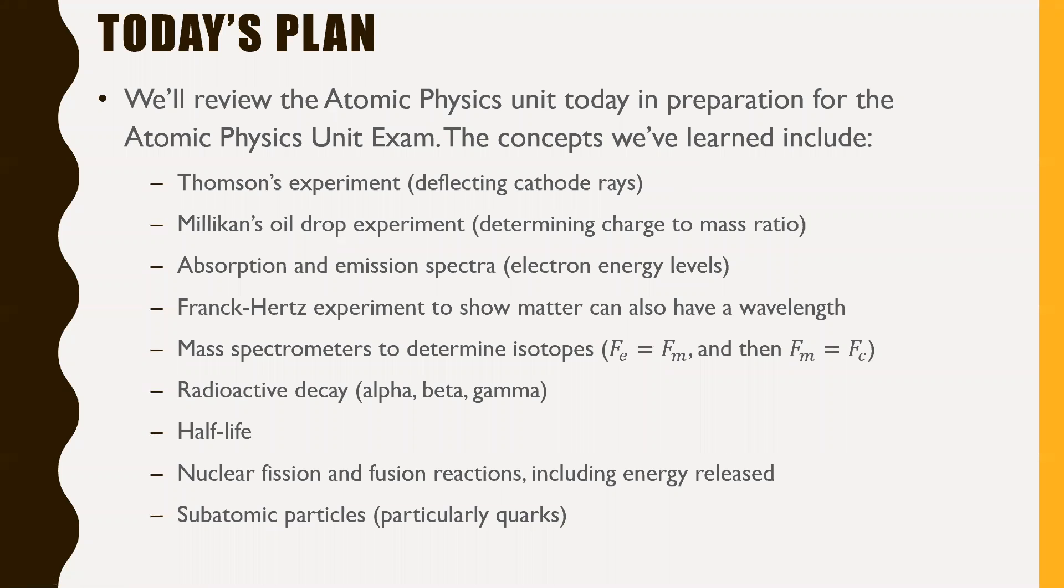So the concepts we've learned include Thomson's experiment, which is deflecting cathode rays, Millikan's oil drop experiment, which is determining charge to mass ratio, absorption and emission spectra, which is electron energy levels, whether they're being absorbed or emitted. The Franck-Hertz experiment, which showed matter can also have a wavelength. Mass spectrometers, which determine isotopes, that's where Fe equals Fm in the first stage to select a velocity, and then Fm equals Fc, that's where you actually determine what isotope it is based on the mass. Radioactive decay, which is alpha, beta, and gamma. Half-life, nuclear fission and fusion reactions, including the energy released.